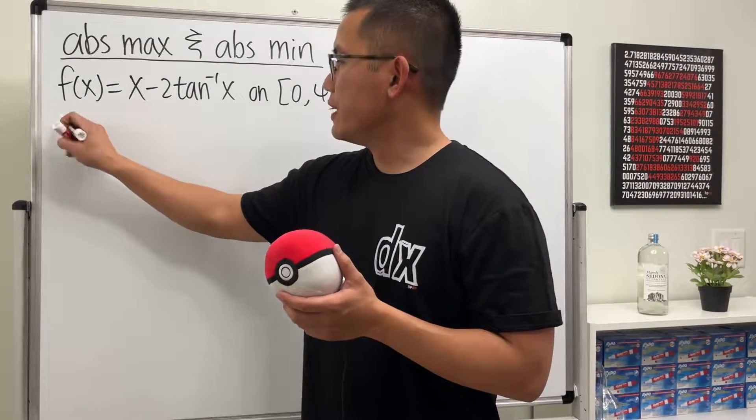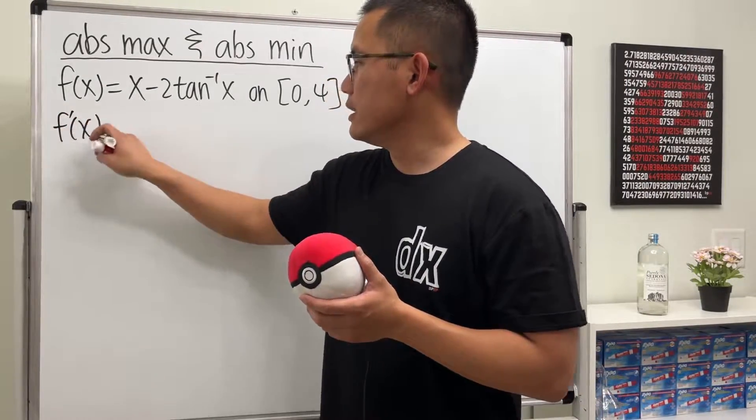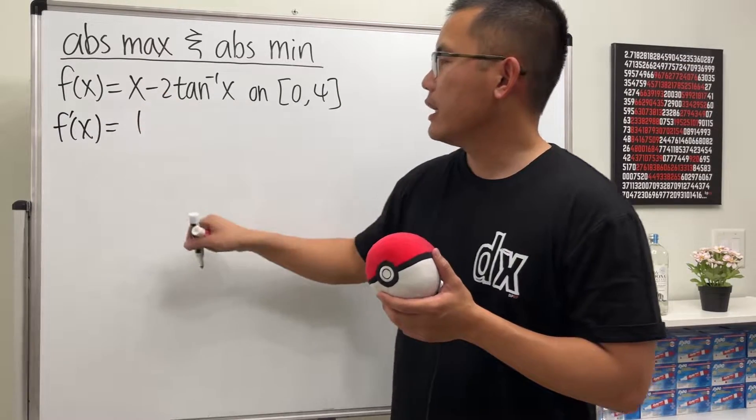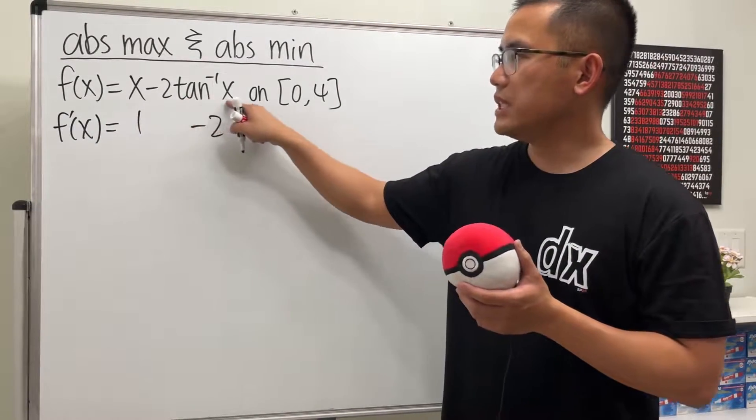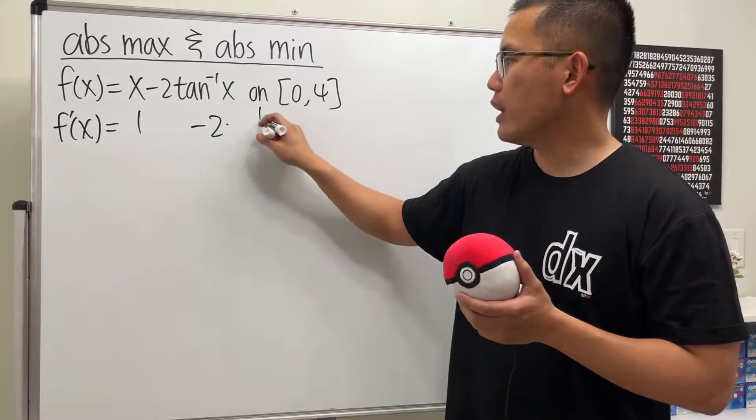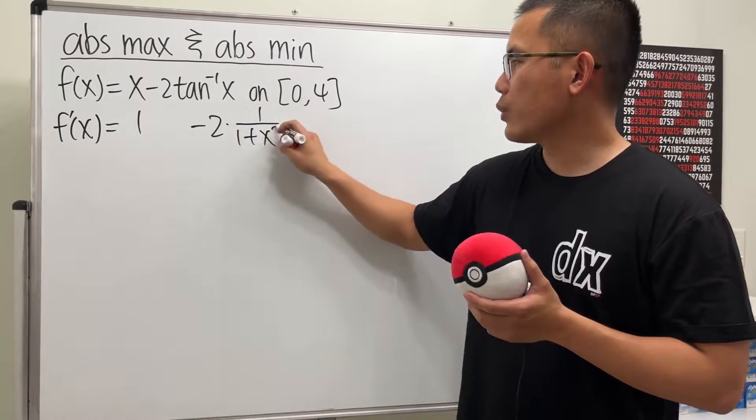Let's get the derivative first, f'(x). The derivative of x is just 1, and then minus 2, and the derivative of inverse tangent is 1 over 1 plus x squared.